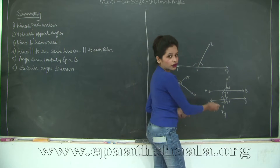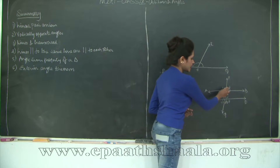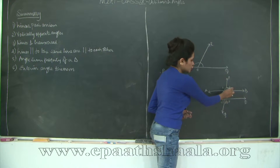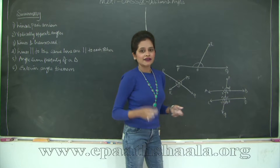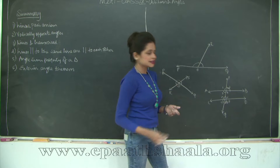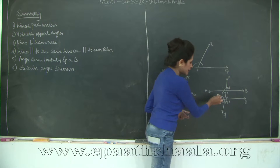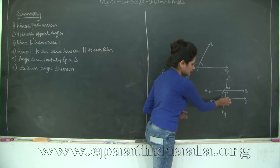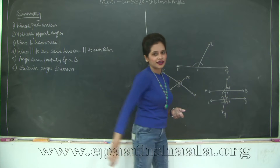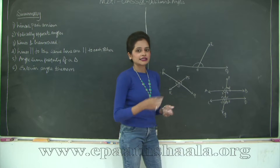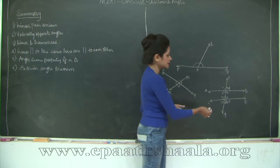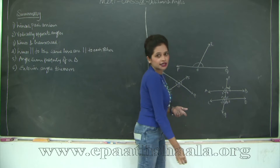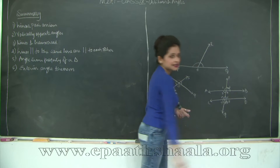For parallel lines, the corresponding angles are equal: 1 equals 5, 2 equals 6, 3 equals 7, and 4 equals 8. The alternate interior angles are also equal: 3 equals 6 and 4 equals 5. And the sum of interior angles on the same side of the transversal is 180 degrees: 3 plus 5 equals 180 degrees, and 4 plus 6 equals 180 degrees.